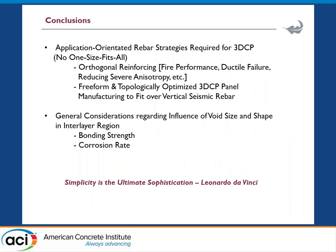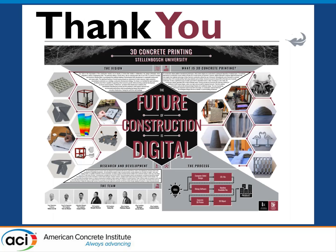To conclude: application-oriented rebar strategies are mostly required for 3D printed concrete — there is no one-size-fits-all solution. Orthogonal reinforcing is a general strategy that improves fire performance, ductility, and reduces anisotropy. Freeform and topology-optimized printed panels manufactured to fit over vertical seismic rebar offer a viable method for seismic zones. Key future considerations include bond strength and corrosion rate. Thank you very much — the floor is open for questions.